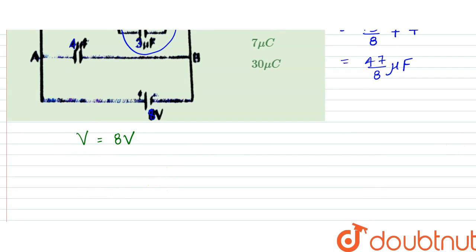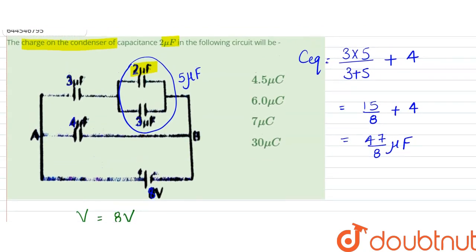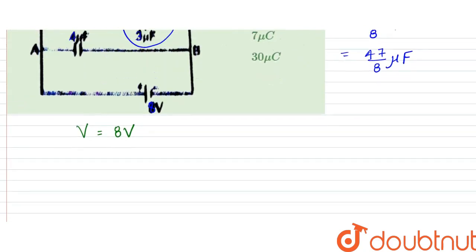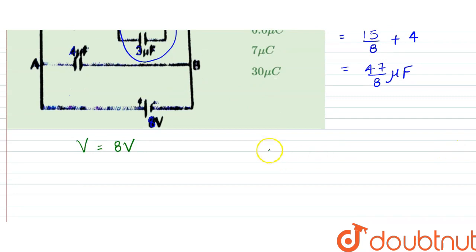So what we could say is that since the total amount of charge, first of all as we can see that the equivalent circuit here, the capacitance in upper branch would be 15 by 8 microfarad.